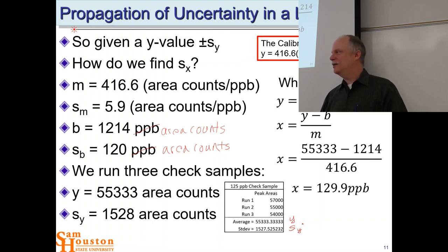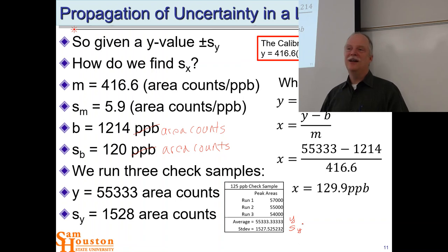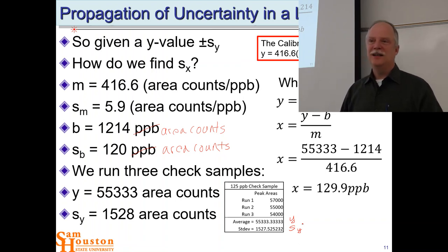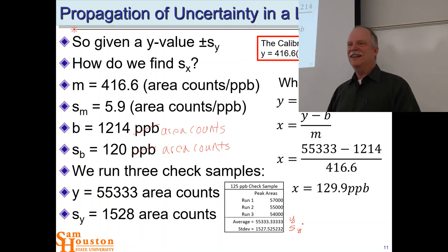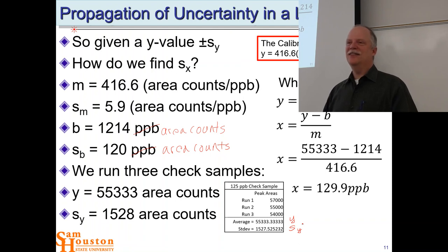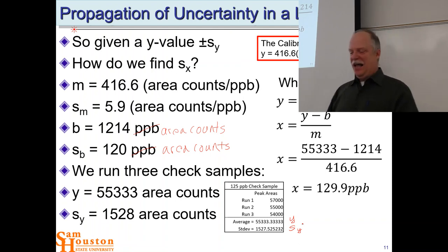Earlier, someone noticed the intercept value. That's valid — that intercept is something we'll look at in a couple of lectures from now. It's a great point to bring up: looking through the ANOVA table quickly and spotting that the intercept might be problematic shows real analytical thinking.